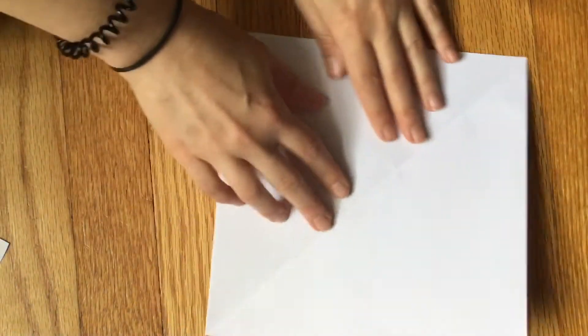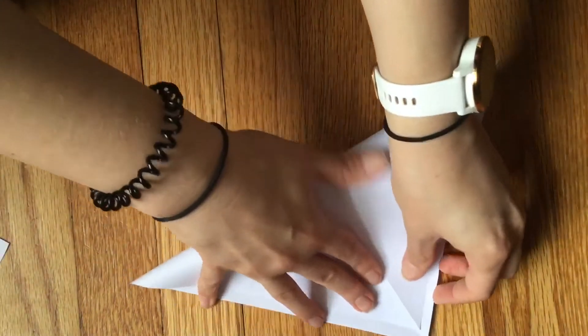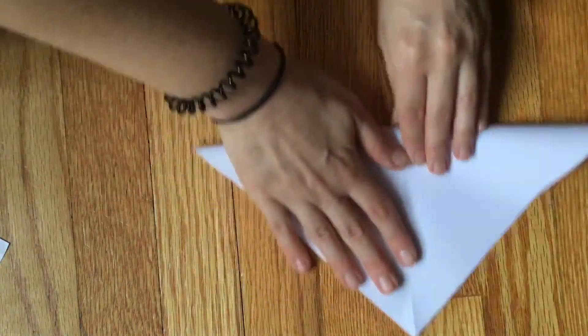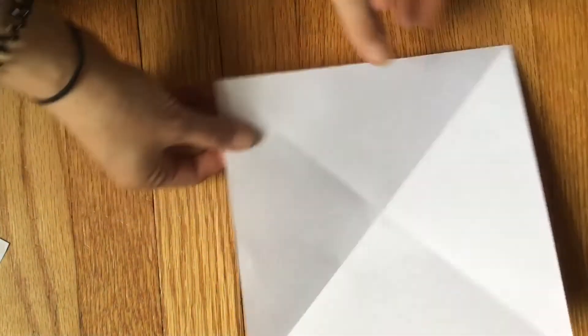You'll be left with a square with a diagonal crease. Next you'll fold it again to make another diagonal crease in the opposite direction, creating kind of a cross through the middle of your square.